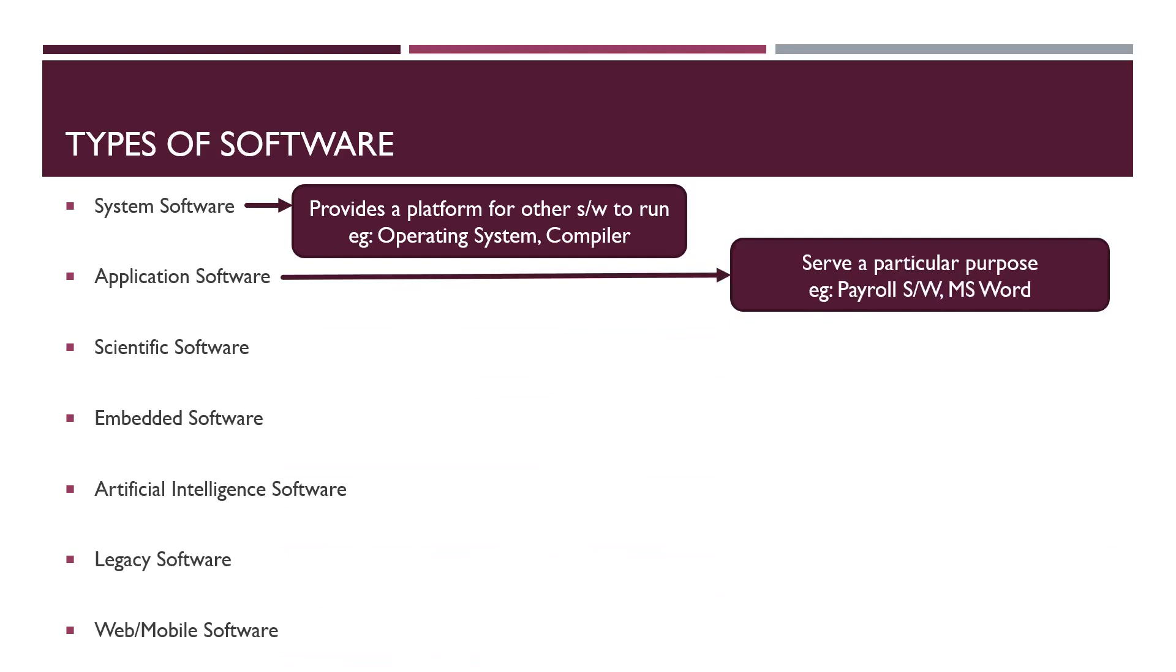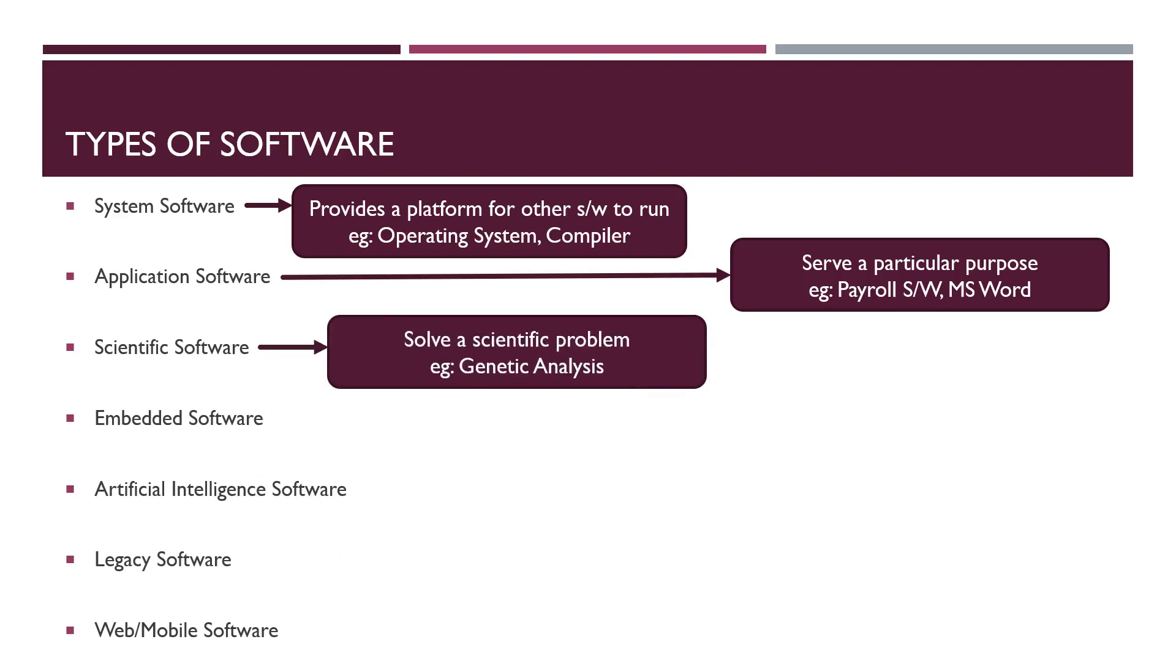Second category of software is application software. They are developed for particular purpose. If this type of software fulfills the requirement of a particular business, then it is called business software. Next is scientific software. Scientific software are used to solve a complex problem.